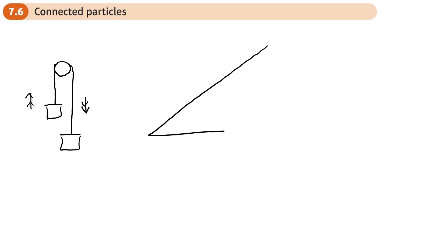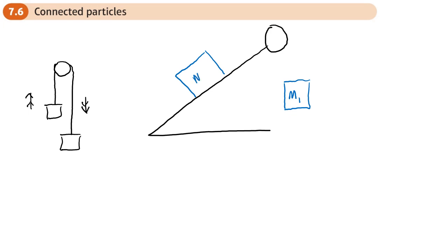So we have something like this — maybe we've got a pulley at the end, and we'll have a mass here we'll call m1, and a mass here we'll call m2, with a string or rope passing over the pulley to that mass.